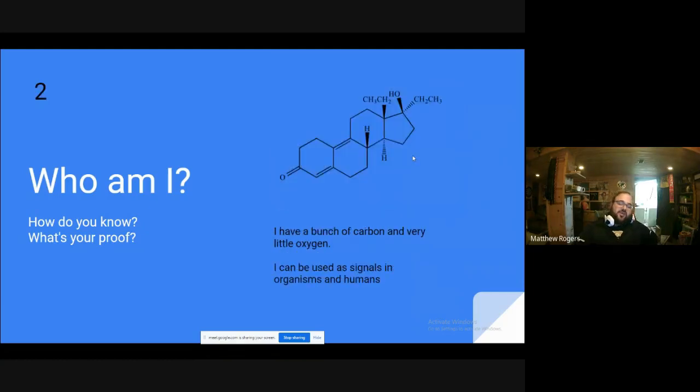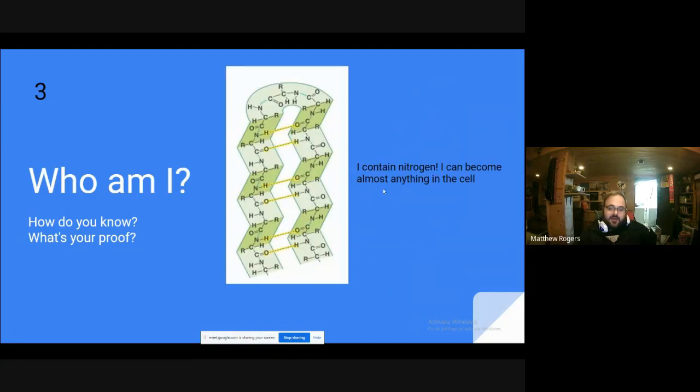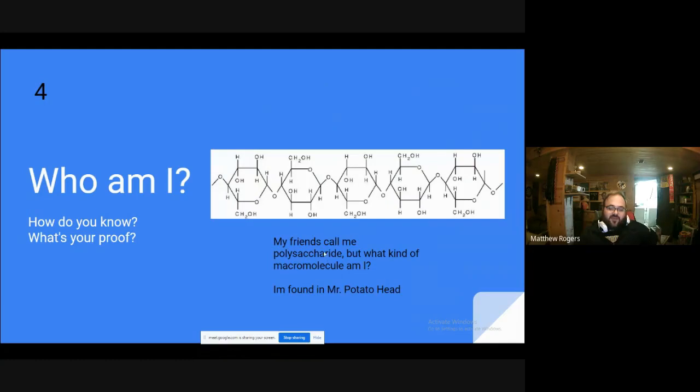Number two is a steroid. They have a bunch of carbons, very low oxygens, that can be used as signals in organisms and humans. So steroids are used a lot as hormones. The most famously in humans is testosterone and estrogen. So it makes you a guy or a girl. Next one, I contain nitrogen, I can become almost anything in the cell. This is kind of trying to point you towards a protein. My friends call me a polysaccharide. If we remember, saccharide means sugar, poly, so you know that's probably carbohydrate. I'm fond of Mr. Potato Head. I'm trying to get you to think down to starch. We talked about in carbohydrates that starch is fond of potatoes.